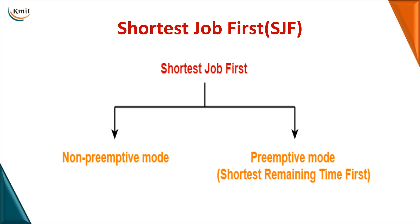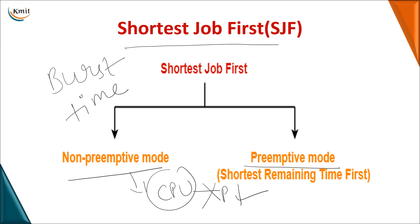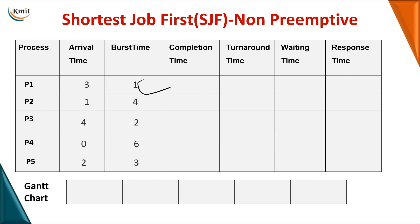The next algorithm is Shortest Job First (SJF). Unlike FCFS which is based on arrival time, SJF is purely based on burst time — we select the process with the shortest burst time. SJF can be either non-preemptive or preemptive. In non-preemptive mode, once a CPU is assigned to a process, it runs to completion. In preemptive mode, if a new process arrives with a shorter remaining time, the current process is preempted. The preemptive version of SJF is called Shortest Remaining Time First.